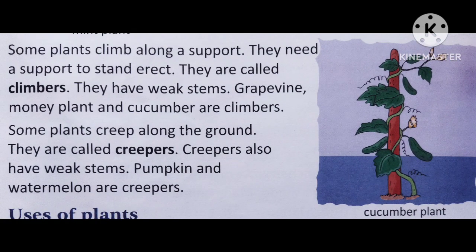Now, some plants climb along a support. They need a support to stand erect and are called climbers. Climbers have weak stems. Grapevine, money plant, and cucumber are climbers. They climb up with the support of a wall or anything beside them and cannot stand straight on their own. You might have a money plant at home — have a look at how it takes support of a wall or a stick to grow. Pea plant is also an example of a climber.